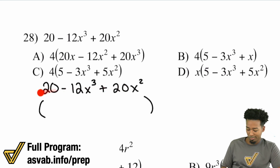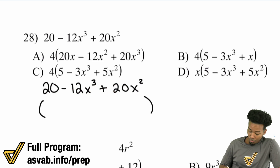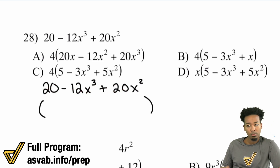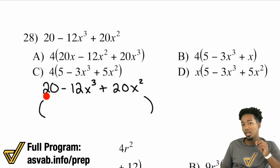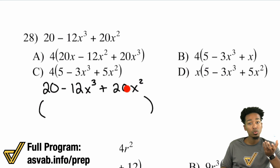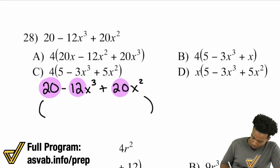Should I take out a negative from everything? No, not necessary — your first term is positive, so you want to leave it positive. Then the numbers: 20, 12, and 20. What do they share? Well, 20 is 4 times 5, 12 is 4 times 3, and 20 is 4 times 5. So you can pull out a 4 from each of those. I'm going to go ahead and highlight each of these and pull out the 4.